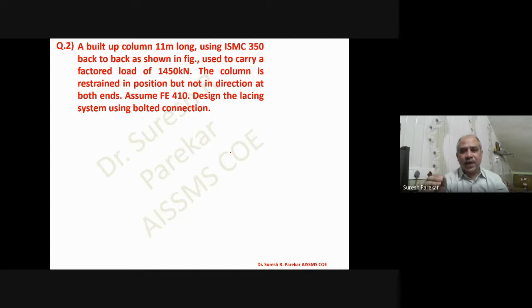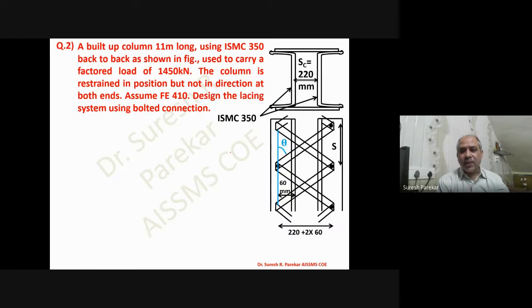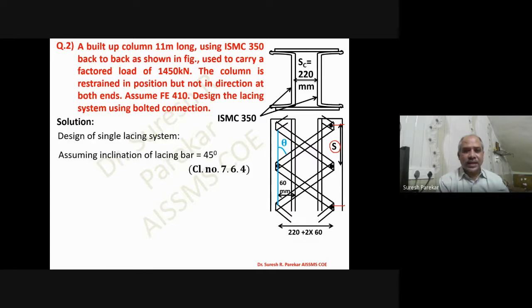Now we go to the double lacing problem: column 11 m long, 1450 kN load — same parameters — to highlight the differences. In single lacing, the effective length is between two bolt points; in double lacing it is taken differently. We now design the double lacing system.